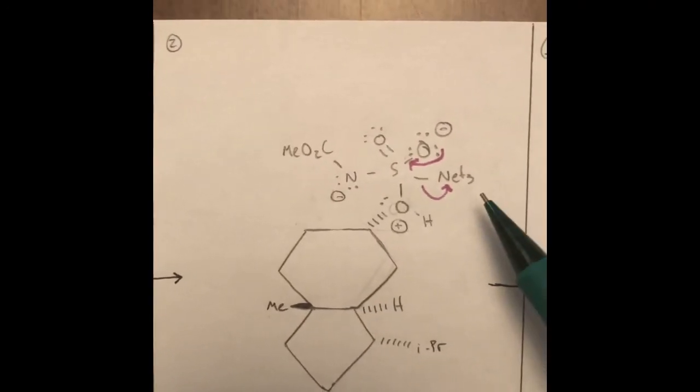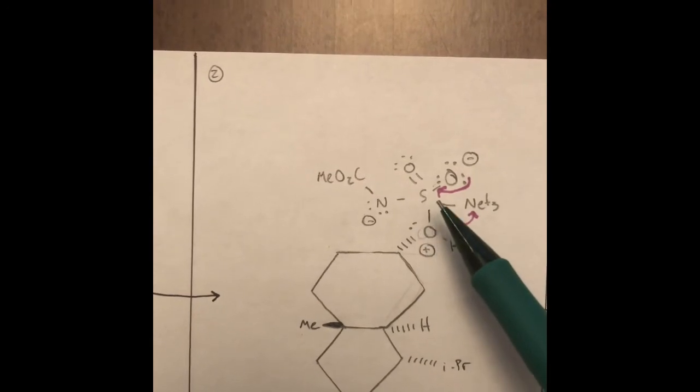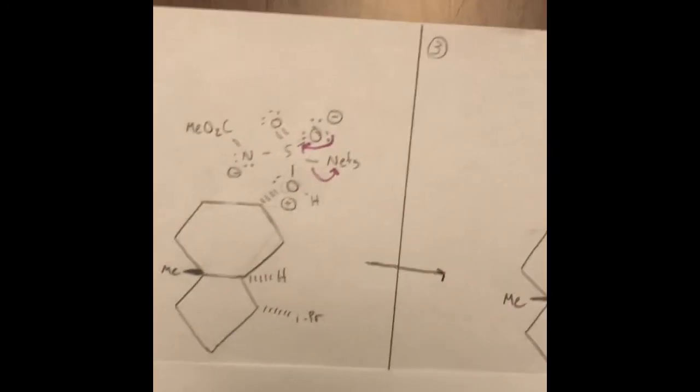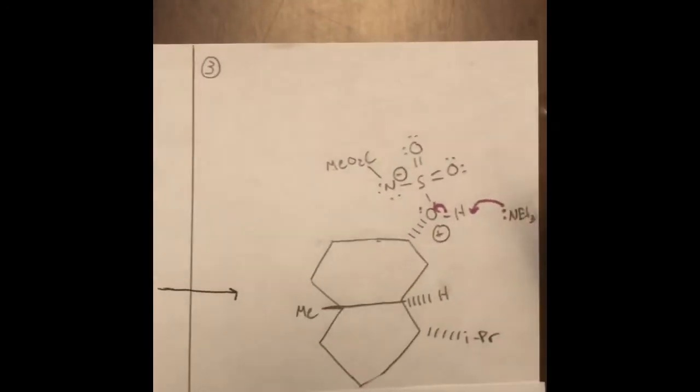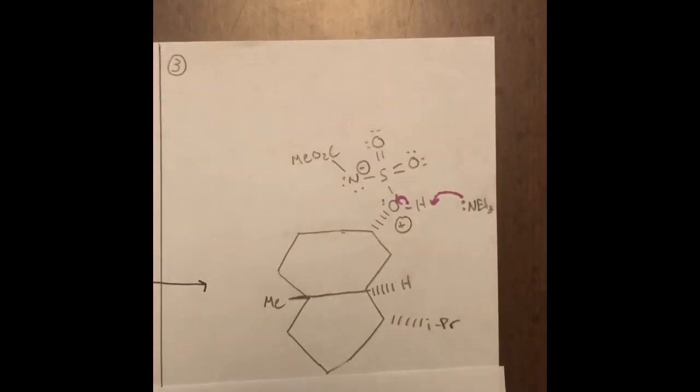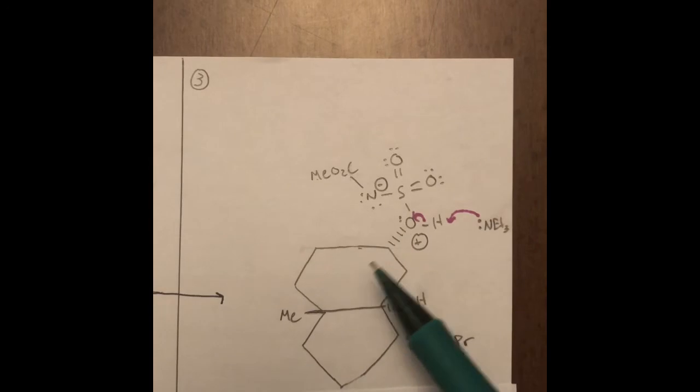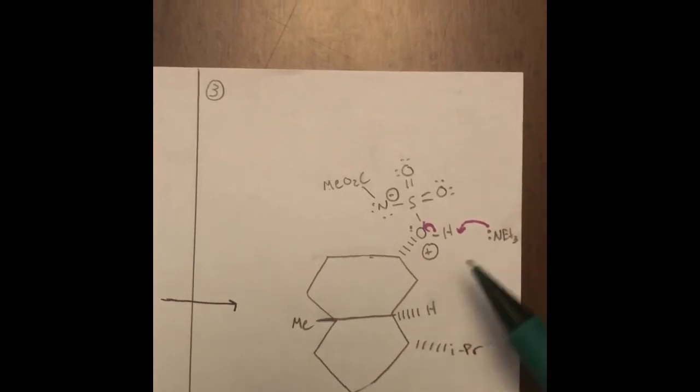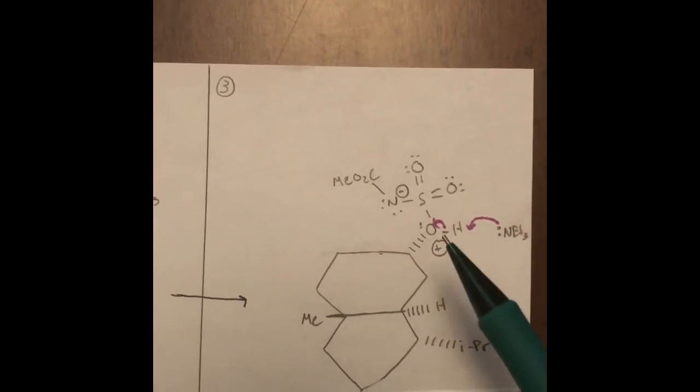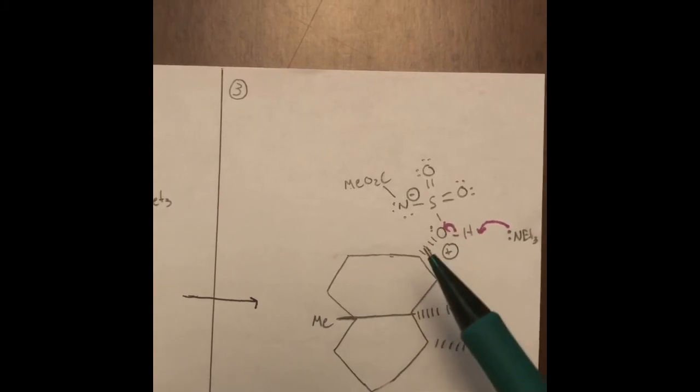And then what happens here is the NET3 bond is going to be broken, which means that the O can then make the double bond onto the S once more. We have the double bond, we have the NET3 on the side. These electrons are going to be used to then take away this H, which means the H is taken away, and the electrons from this are then given to the O, which then takes away this plus.